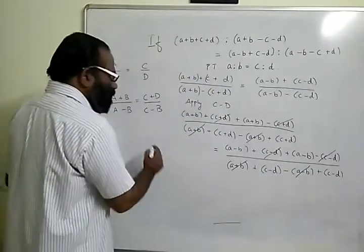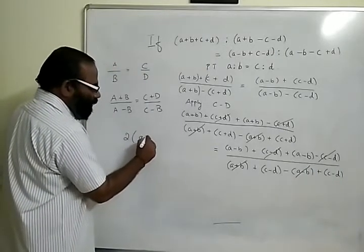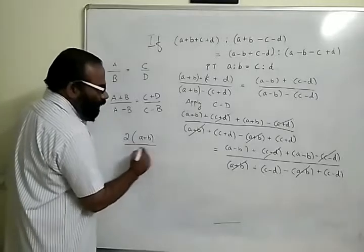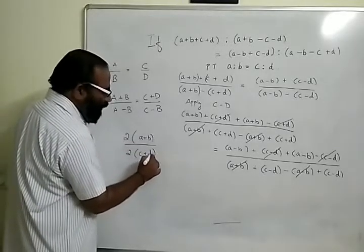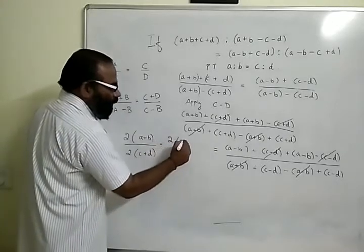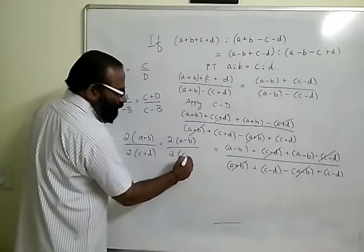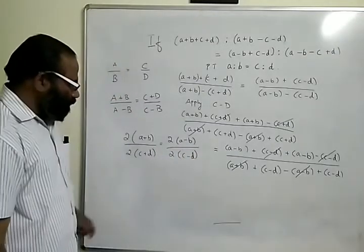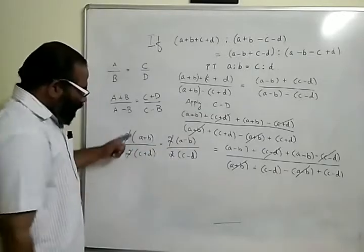And here I have a minus b a plus b, they cancel out. So what is left, I can write it as 2 a plus b by 2 c plus d equals 2 a minus b by 2 c minus d. Now I can cancel out the twos.